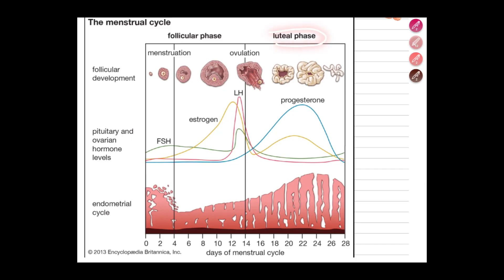After ovulation occurs and the ovum is released, we move into the luteal phase — the phase before ovulation was the follicular phase. In the luteal phase, progesterone level rises while estrogen, FSH, and LH have reduced. Progesterone is going to maintain the thick lining of the uterus. If fertilization occurs the lining is maintained; if fertilization does not occur the lining breaks down.